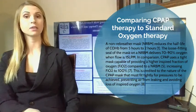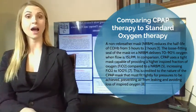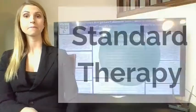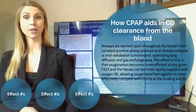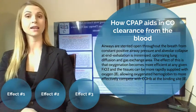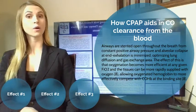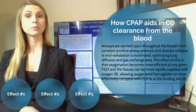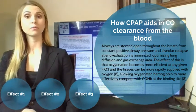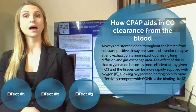The loose-fitting seal of a non-rebreather mask is capable of delivering about 70% oxygen when flow is set to 15 liters per minute. CPAP masks, which have a tight fit, provide a much higher FiO2 than the reservoir mask, believed to be much closer to 100% FiO2. The airways are stented open throughout the breath as a result of this constant positive airway pressure and alveolar collapse at end exhalation is minimized, optimizing lung diffusion and gas exchange area. This makes oxygenation more efficient at any given FiO2, tissues are more rapidly supplied with oxygen, and oxygenated hemoglobin can more effectively compete with carboxyhemoglobin at the binding site.